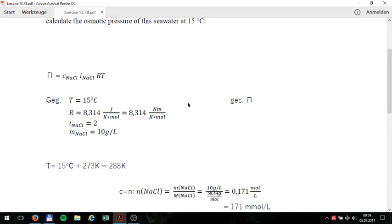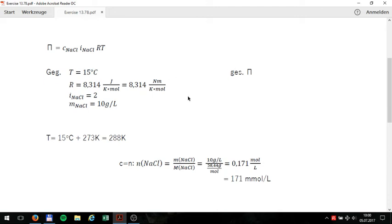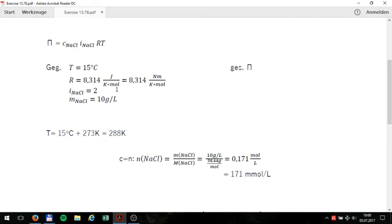Now I come to the given factors. My first given factor is the temperature T. In this case, the temperature is 15 degrees. The gas constant R is 8.314 Joules divided by Kelvin multiplied by mol. This can be transformed into 8.314 Nm divided by Kelvin multiplied by mol. The van't Hoff factor of NaCl is 2 and the mass of NaCl is 10g per liter.